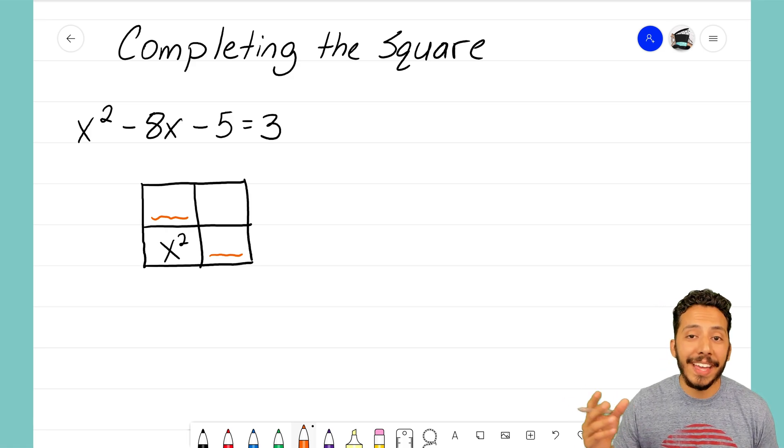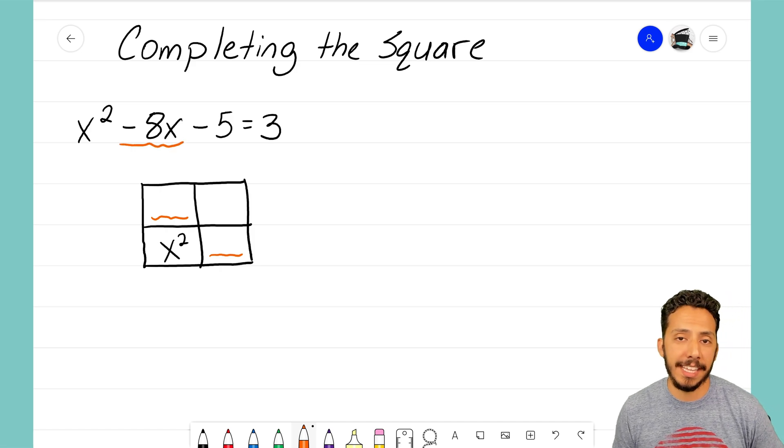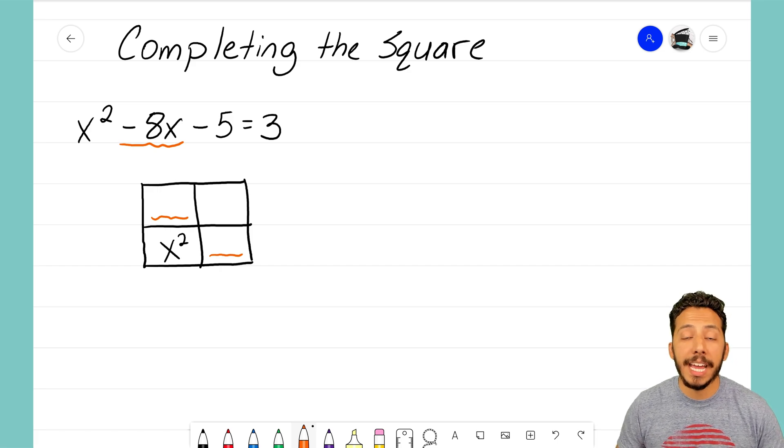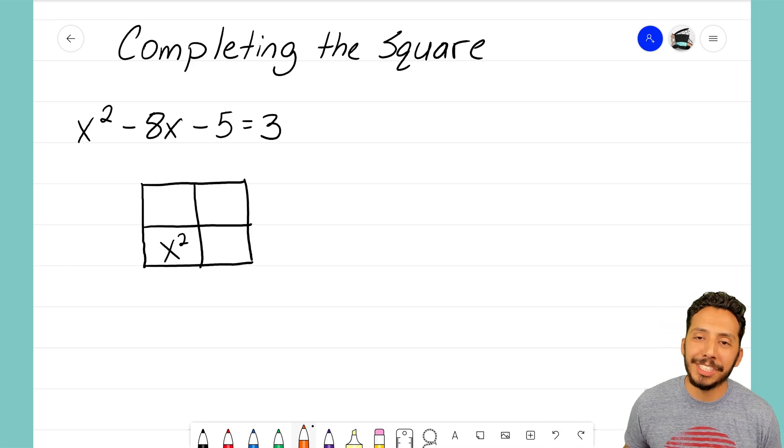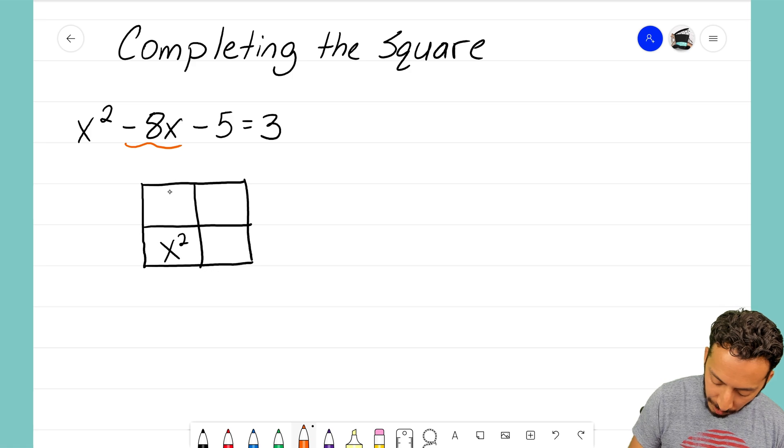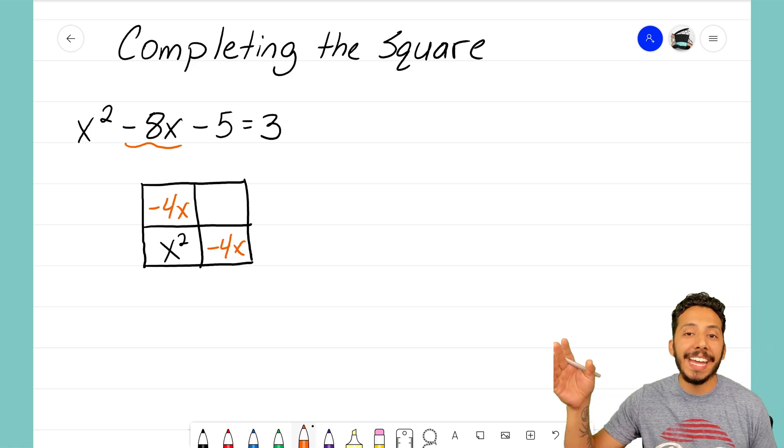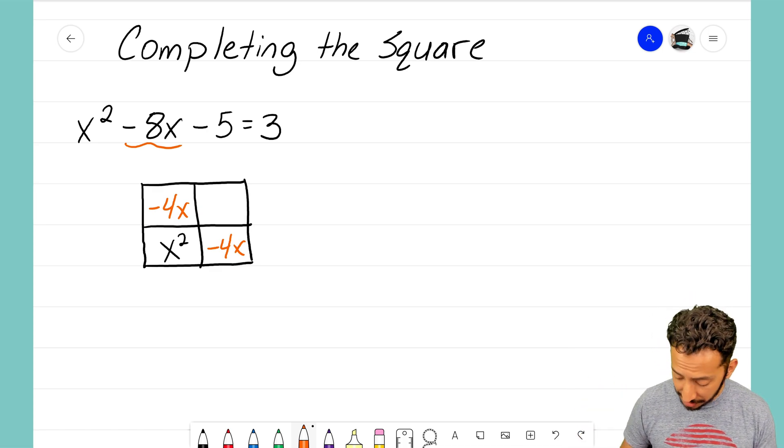And that diagonal is going to be made up of the negative 8x's there. And since I'm trying to make a square, I need to split those negative 8x's evenly. I need to split it in half. So when we take negative 8 and we divide it by 2, we're going to end up with negative 4x and negative 4x in that diagonal there. That shows us that we've separated the negative 8x in half.